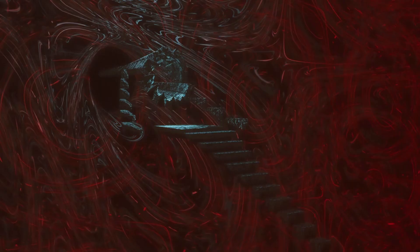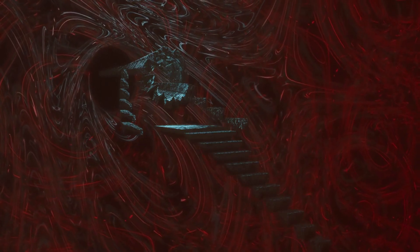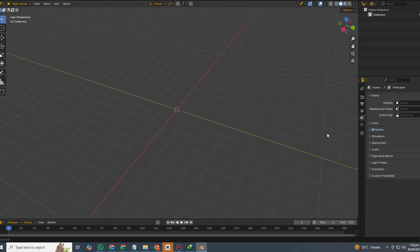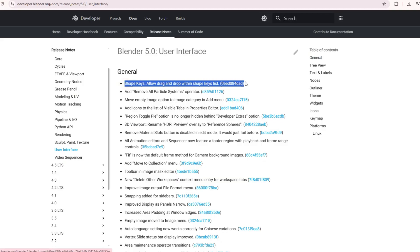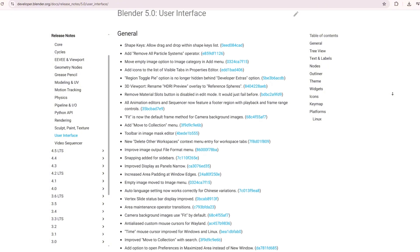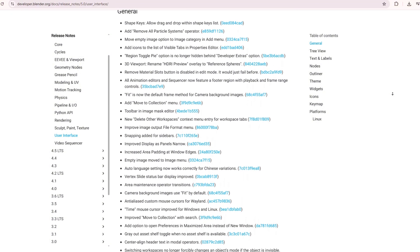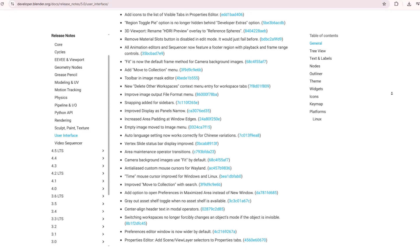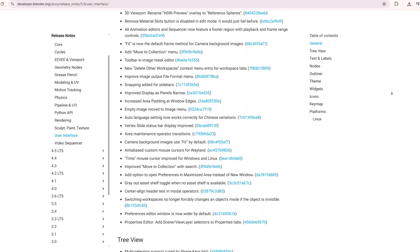In Blender 5.0, not only have new features been added, but the user interface has also been upgraded. Now you can easily drag and reorder shape keys according to your preference, making the workflow much smoother. The outliner has been improved for better navigation, so managing objects is easier than ever. And the menus are now more organized and structured, allowing you to quickly find what you need without hassle.